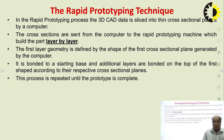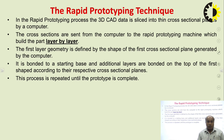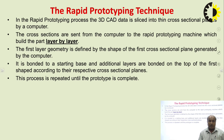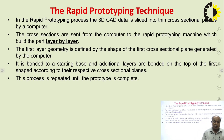There are different types of rapid prototyping techniques available. In the rapid prototyping process, the 3D CAD data is sliced into thin cross-sectional planes by computer. The cross-sections are sent from the computer to the rapid prototyping machine, which builds the part layer by layer. The first layer geometry is defined by the shape of the first cross-sectional plane generated by the computer, then it is bonded to a starting base and additional layers are bonded on top according to their respective cross-sectional planes.